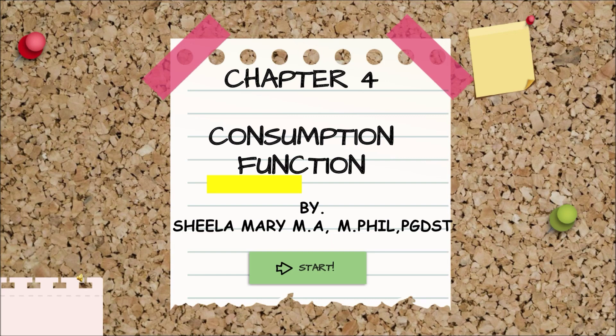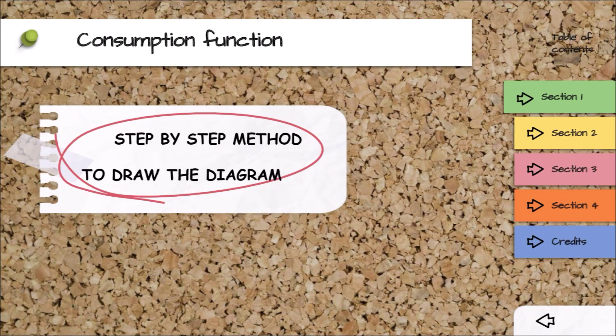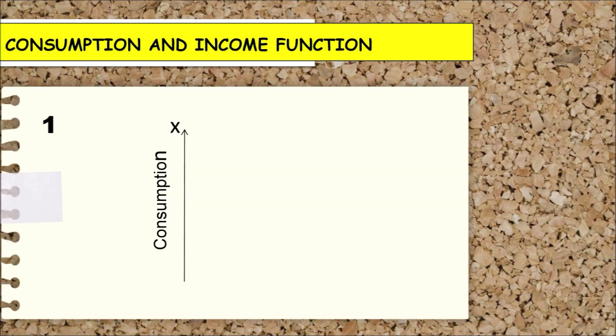The concept is believed to have been introduced into macroeconomics by J.M. Keynes in the year 1936. Now we shall draw this diagram with the step-by-step method. First, draw the x-axis, which represents consumption.